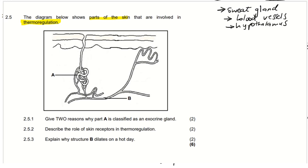The hypothalamus is also involved. There may be some skin receptors but those are just minor organs. So whenever they say parts of the skin involved in thermoregulation, I have to think of the sweat gland, the blood vessels, as well as the hypothalamus.